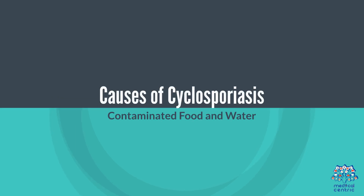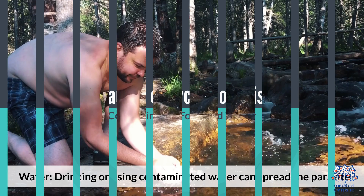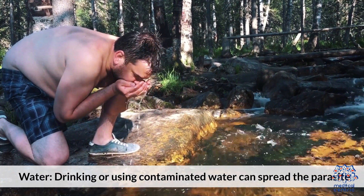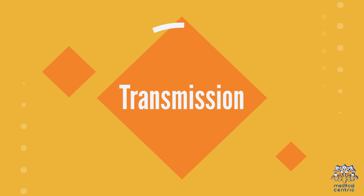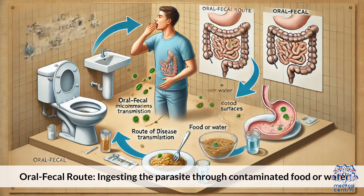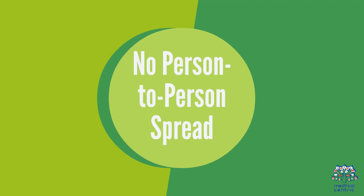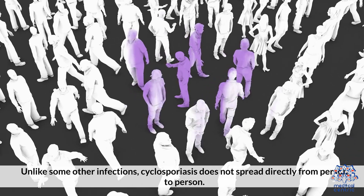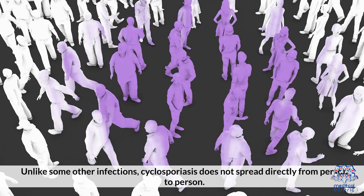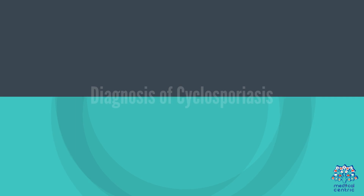3. Causes of Cyclosporiasis. The infection spreads through contaminated food and water. Drinking or using contaminated water can spread the parasite via the oral-fecal route — ingesting the parasite through contaminated food or water. Unlike some other infections, Cyclosporiasis does not spread directly from person to person.